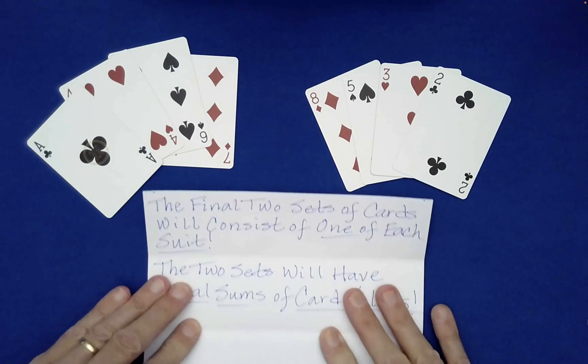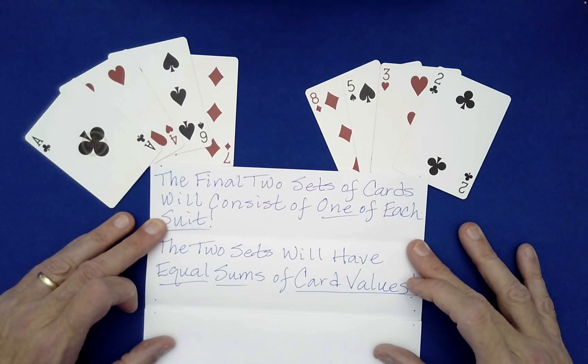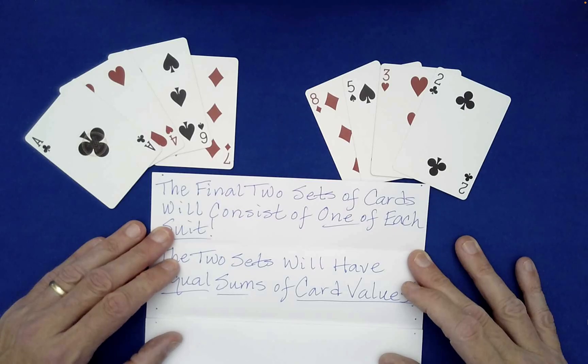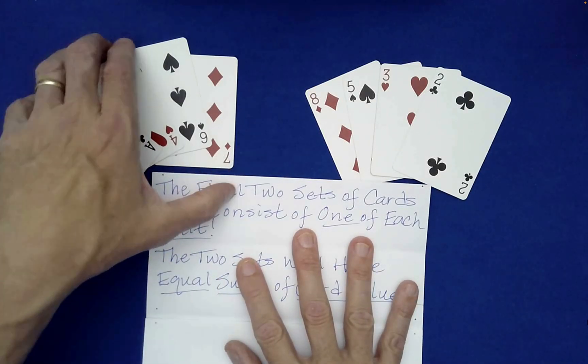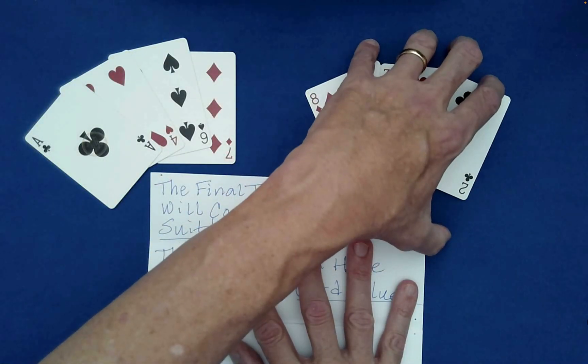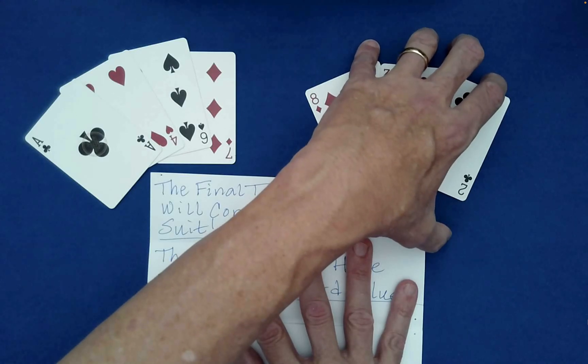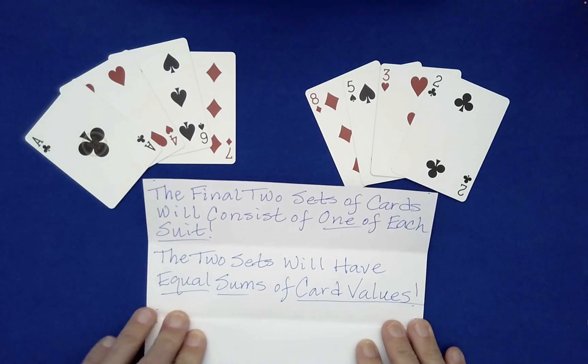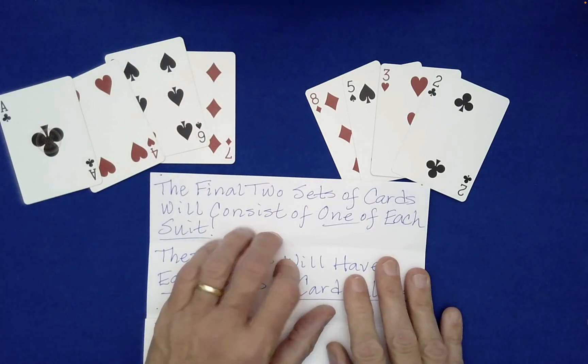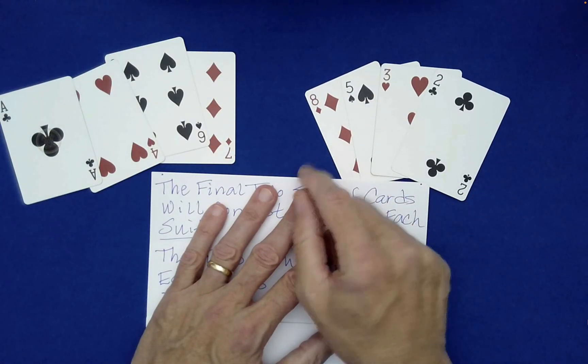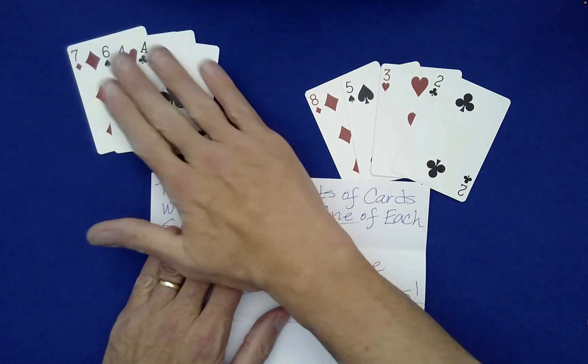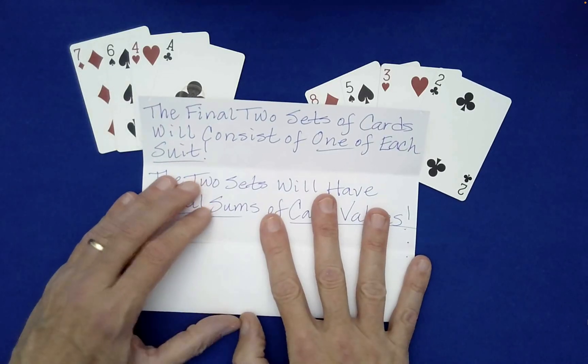We have a second part to the prediction. The two sets will have equal sums of card values. Now, I want you to think about how likely that is to have happened by chance alone, that the particular card values on the left, when added, will equal the sum of the card values on the right. Let's check to see if it's even true. So we get one plus four plus six is 11 plus seven is 18. Eight plus five, 13 plus three is 16 plus two is 18. These indeed add up to 18. So the second part of our prediction is correct.